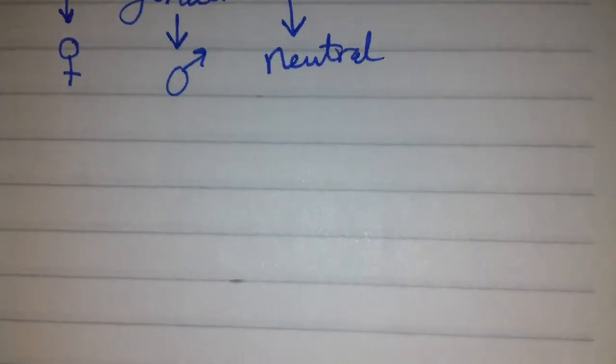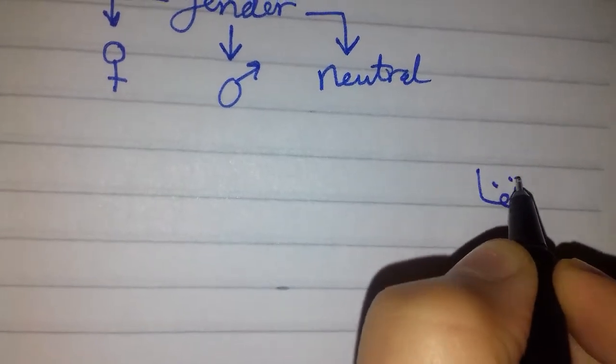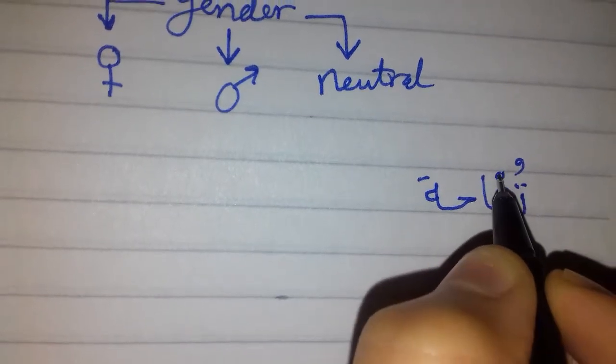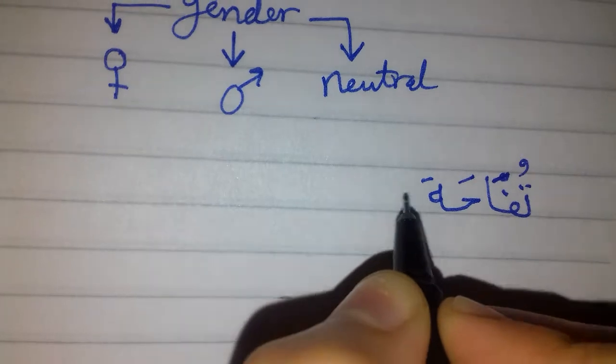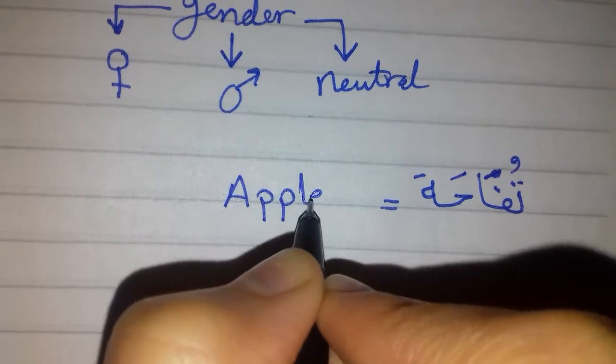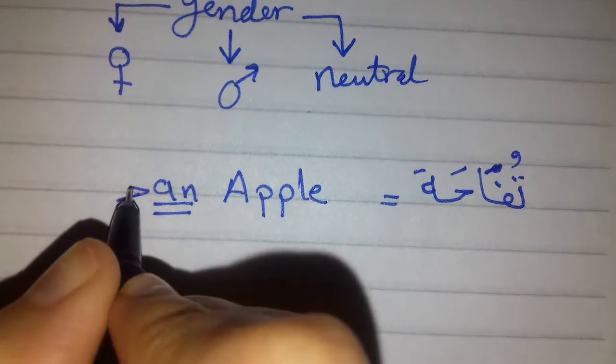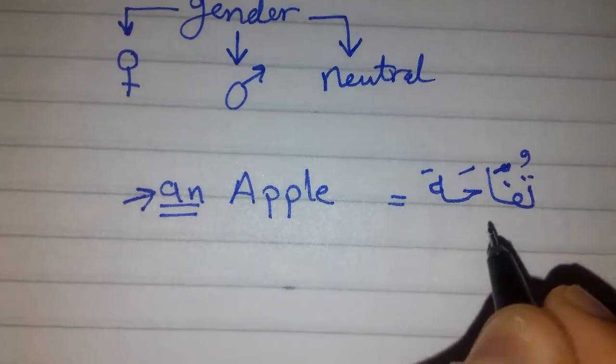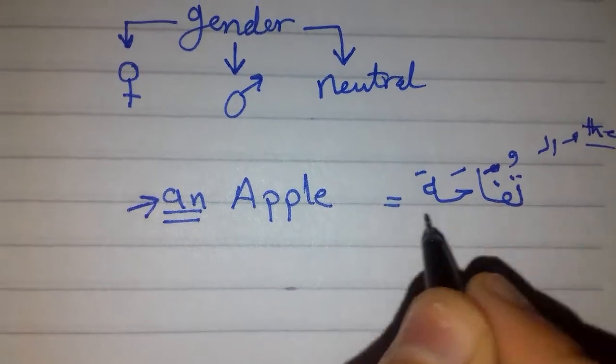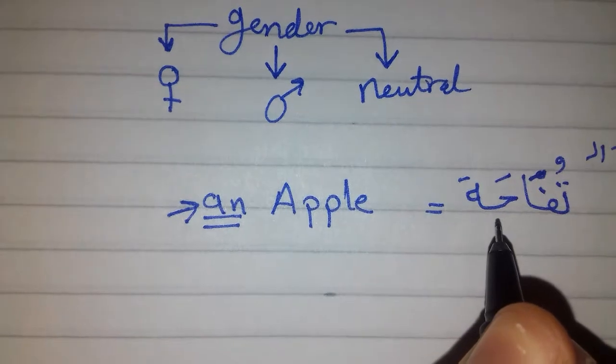Let's start with some random words. For example, here we have this word: Tufaha. Tufaha means apple, or an apple. But as I said before, we have nothing equal to 'an' in Arabic. You just say the word without L. L means 'the'. So here is the first sign of gender.